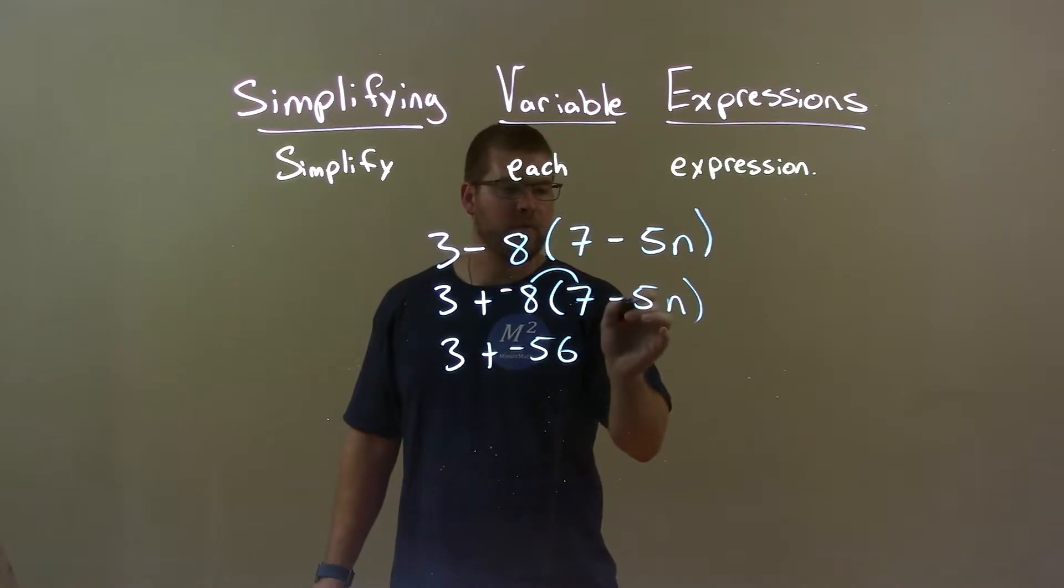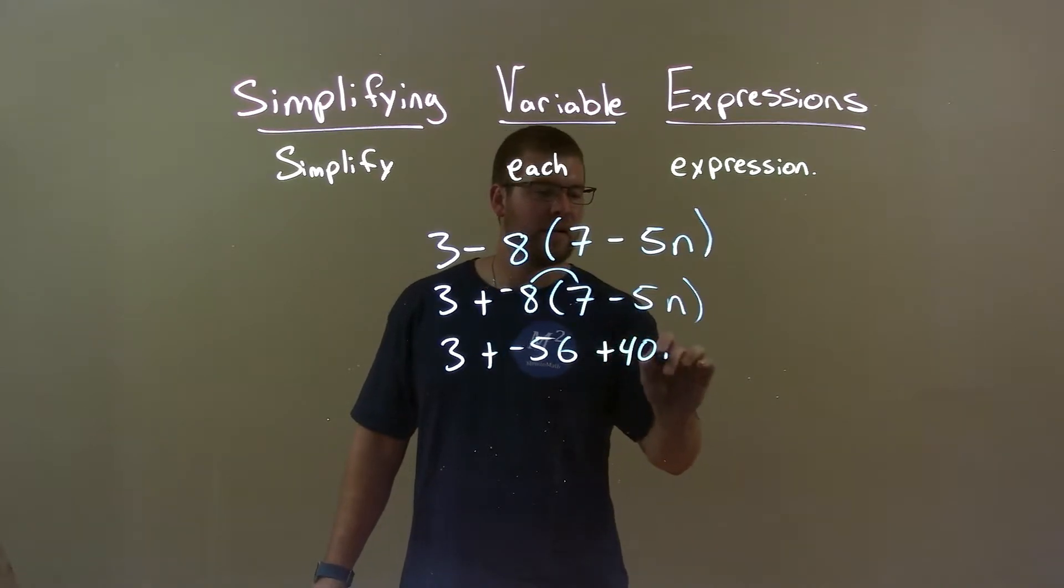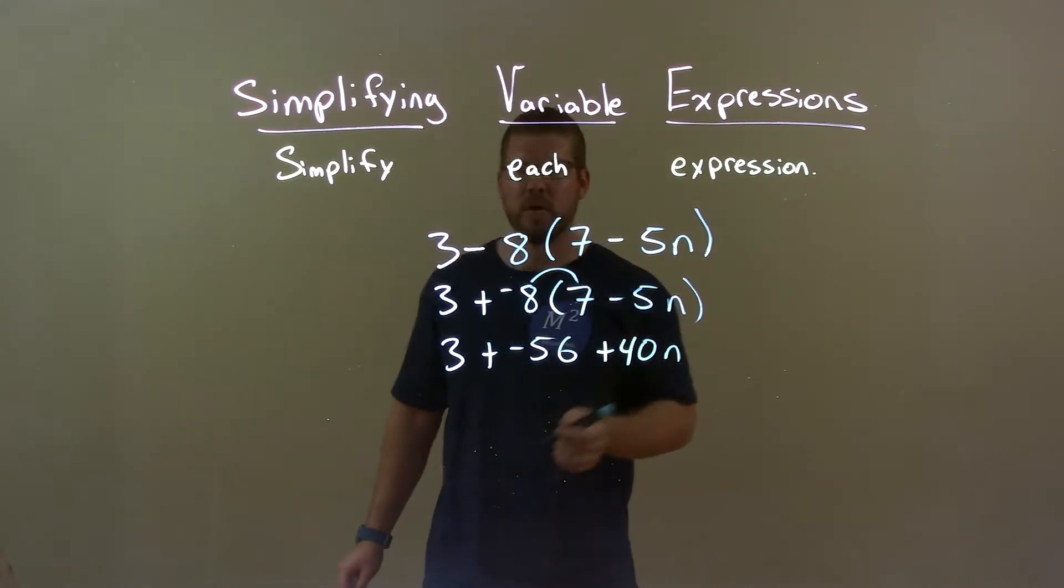Then this minus 5 is right there, so it's like plus a negative right? Negative 8 times negative 5 essentially is a positive right? Negative times negative is a positive. Positive 40, and then we have n. So a positive 40n.